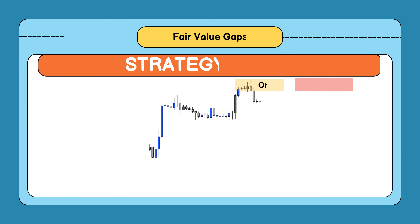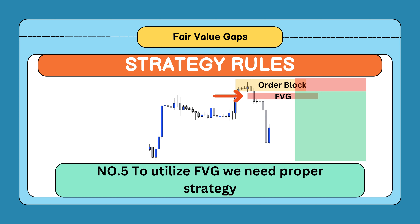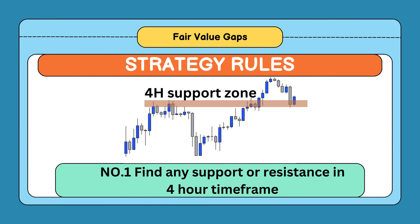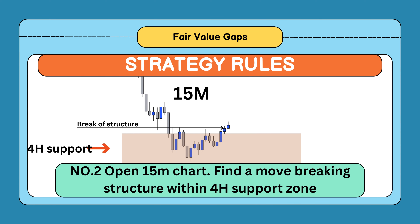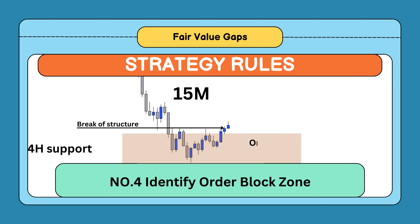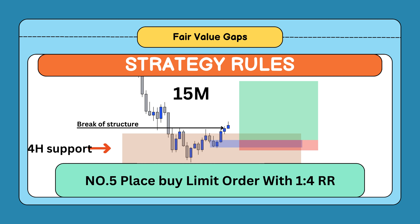Let me explain the steps of the strategy we are going to use in order to utilize these fair value gaps efficiently. The rules of this trading strategy are very easy. Find any support or resistance zone on the 4-hour timeframe. Open the 15-minute timeframe chart and find a move with a break of structure. Find fair value gaps in this move, then identify the order block zone. Place your order at the beginning of the zone and put your stop-loss 2 to 3 pips below this zone.